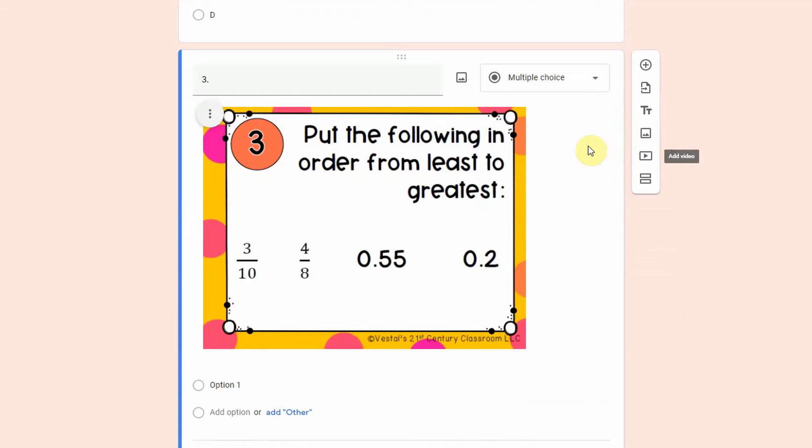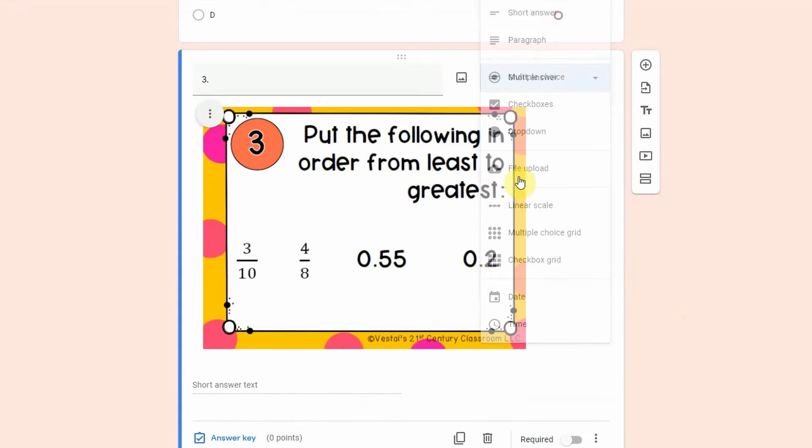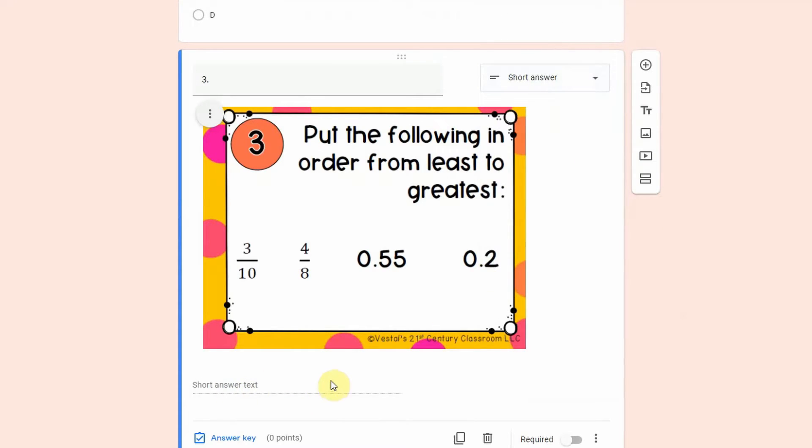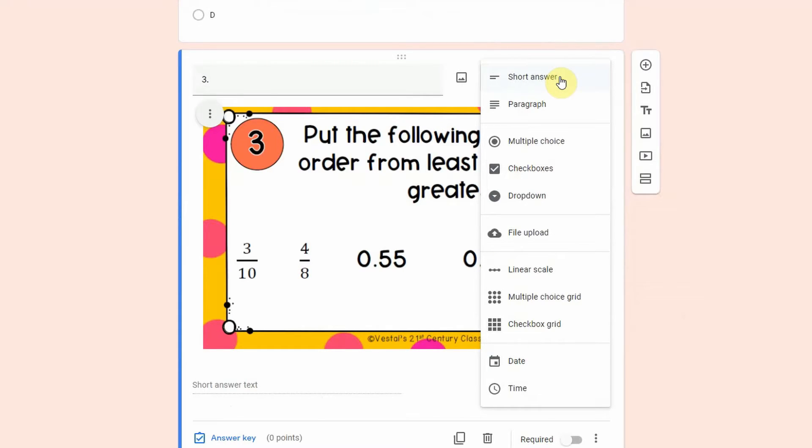So a few things that I could do is I could make it a short answer and have students type the response. If I do that I want to be very specific in my instructions about how they should type the response. You could also do for things where students are ordering, a multiple choice grid is a great option.